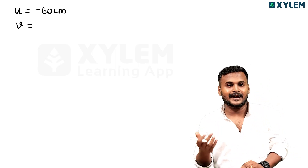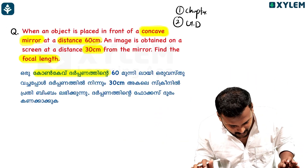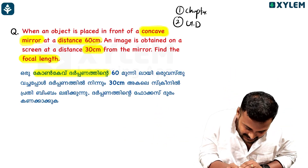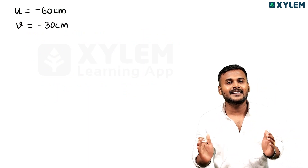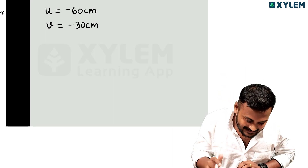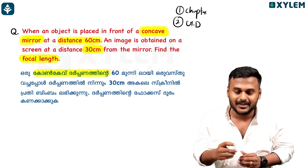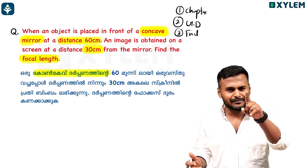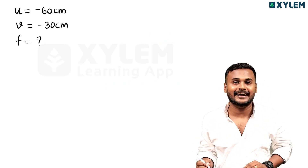V is the image distance. Real image is not enough. That is 30 cm, so this is minus 30 cm. These two things are different. Given data is given. The third thing is to find: we have to find the focal point.